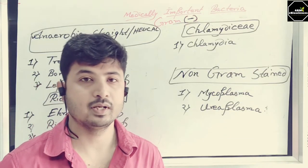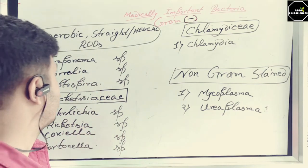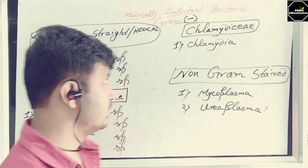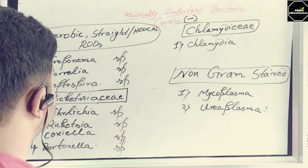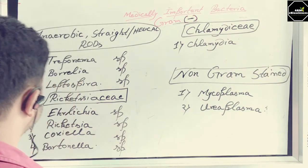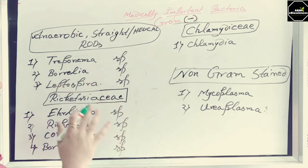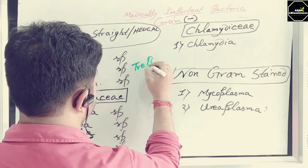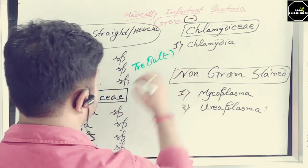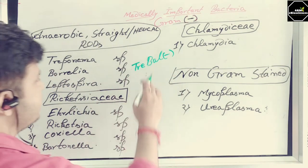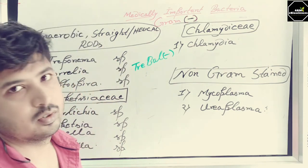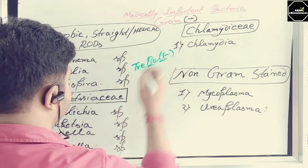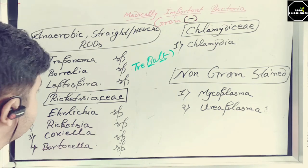The next gram-negative group is anaerobic straight to helical rods, along with the Rickettsia group and Chlamydia group. For the anaerobic straight to helical rods, the bacteria are Treponema, Borrelia, and Leptospira. Remember these as 'Tree Ball Negative' — like a wooden ball. Treponema for Tree, Borrelia for Ball, Leptospira for the last part — all gram-negative.